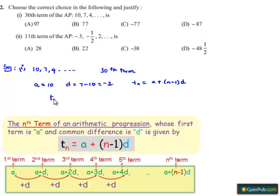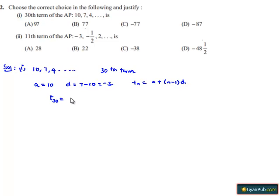Therefore T30 equals a plus (n-1) times d, which is 10 plus (30-1) times d. This equals 10 plus 29 times (-3).